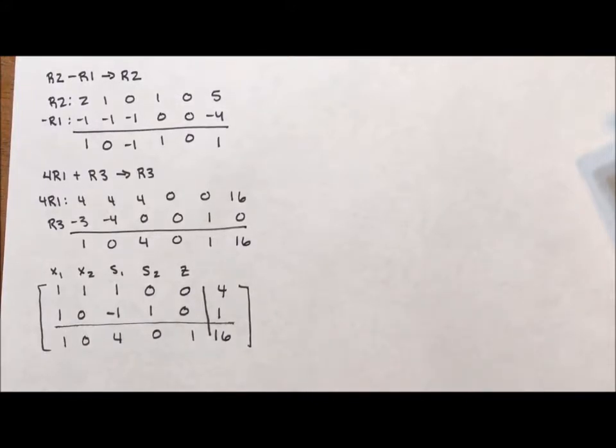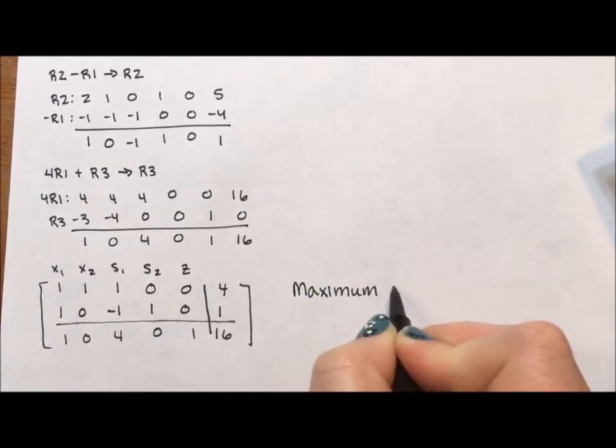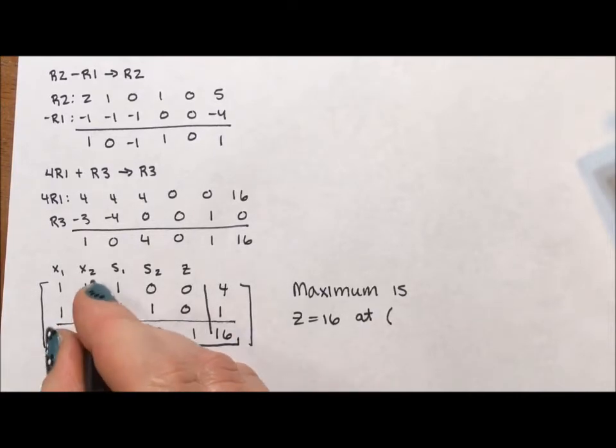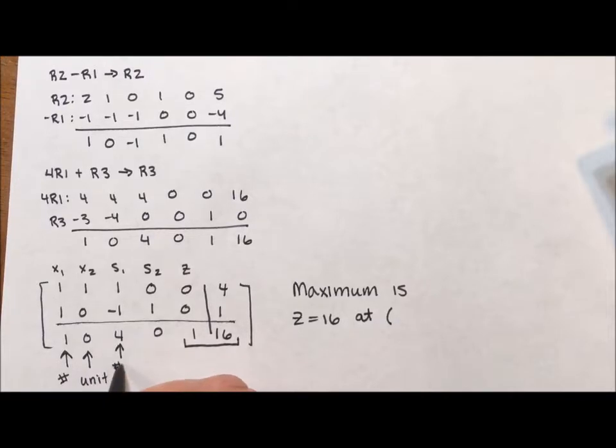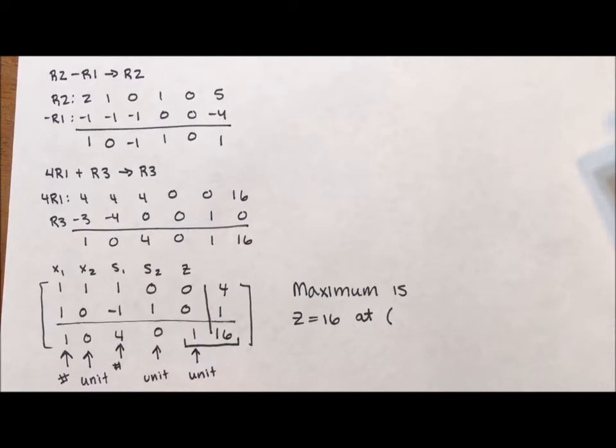So how we figure out the maximum is, we say the maximum is Z equaling 16, because that's what this row says right here. Z equals 16 at, let's see. When we translate this, notice that this has lots of numbers, and this is a unit. And by unit, I mean it's made up of one number and all other zeros. This has lots of numbers, this is a unit, and this is a unit. Unit columns give us our answers for those variables. So this is a unit column, so I know that X sub 2 equals 4. This is a unit column, so I know that S sub 2 is equal to 1. And this is a unit column, which gave me Z is equal to 16.